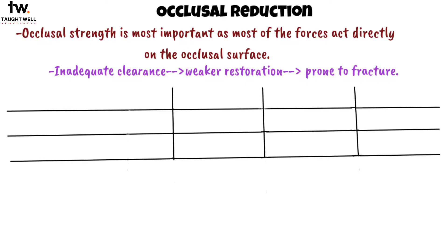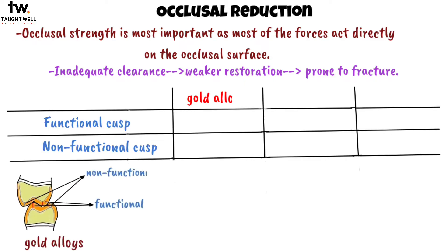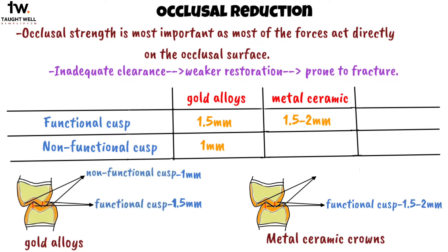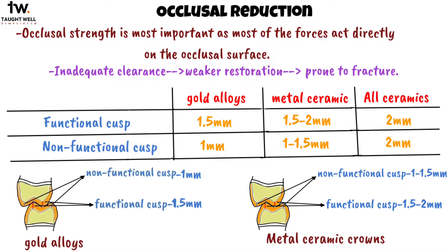The amount of occlusal reduction required for commonly used materials is as follows: For gold alloys, 1.5 mm clearance for functional cusps and 1 mm for non-functional cusps is needed. For metal ceramic, 1.5–2 mm for functional cusps and 1–1.5 mm for non-functional cusps is needed. And for all ceramics, 2 mm reduction throughout is required.